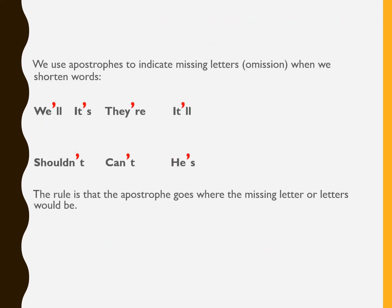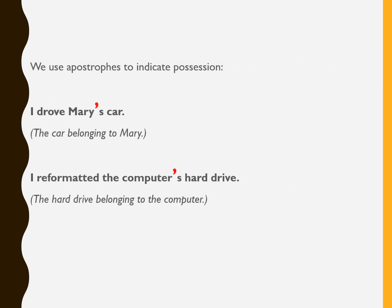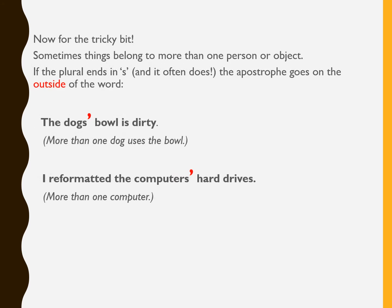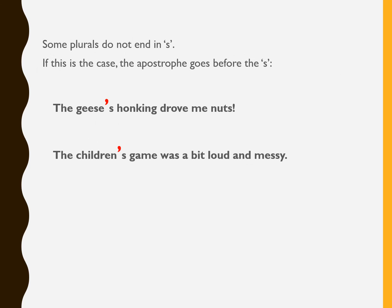Apostrophes are used to indicate missing letters — though people often get these wrong. They are also used to indicate possession. For a single possessor, the apostrophe goes before the s: 'the dog's bowl.' For more than one possessor sharing the same object, the apostrophe goes after the s — 'the dogs' bowl.' Another example: 'I reformatted the computer's hard drives.'